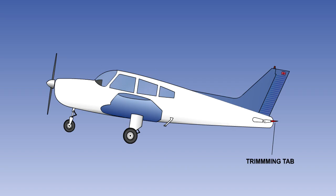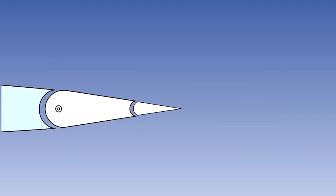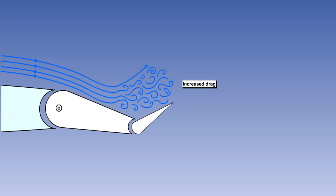There are a number of disadvantages to using an adjustable tab type control to achieve trim. These are a slight reduction in control effectiveness due to the tab force being in opposition to the main flying control surface and an increase in drag due to the deflection of the tab.